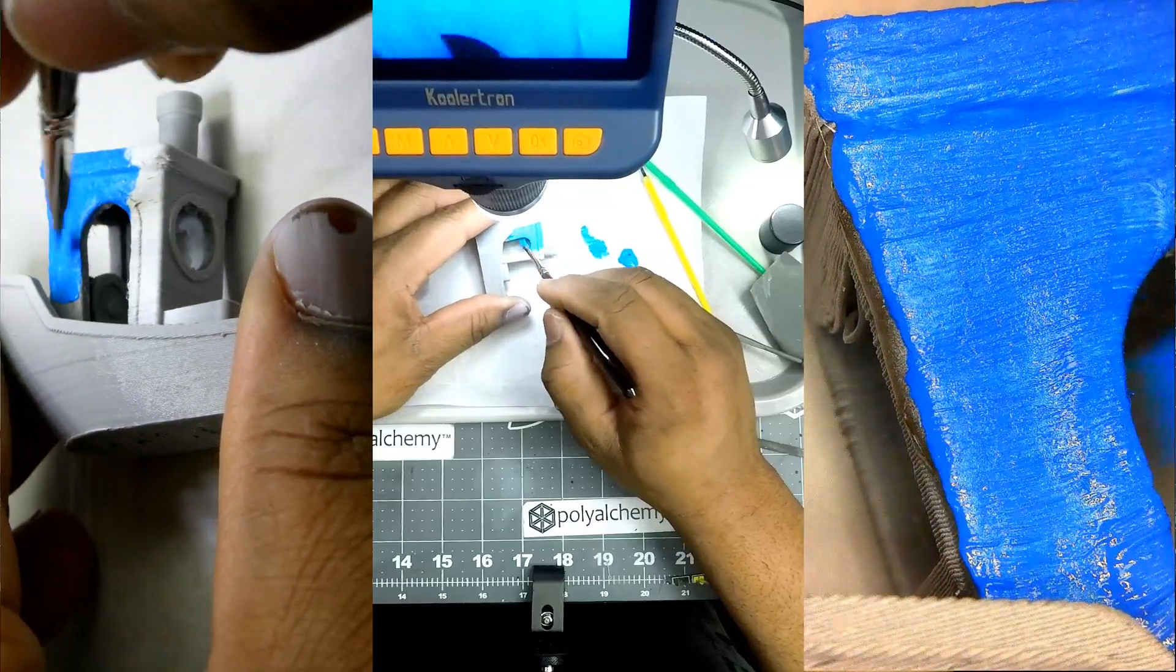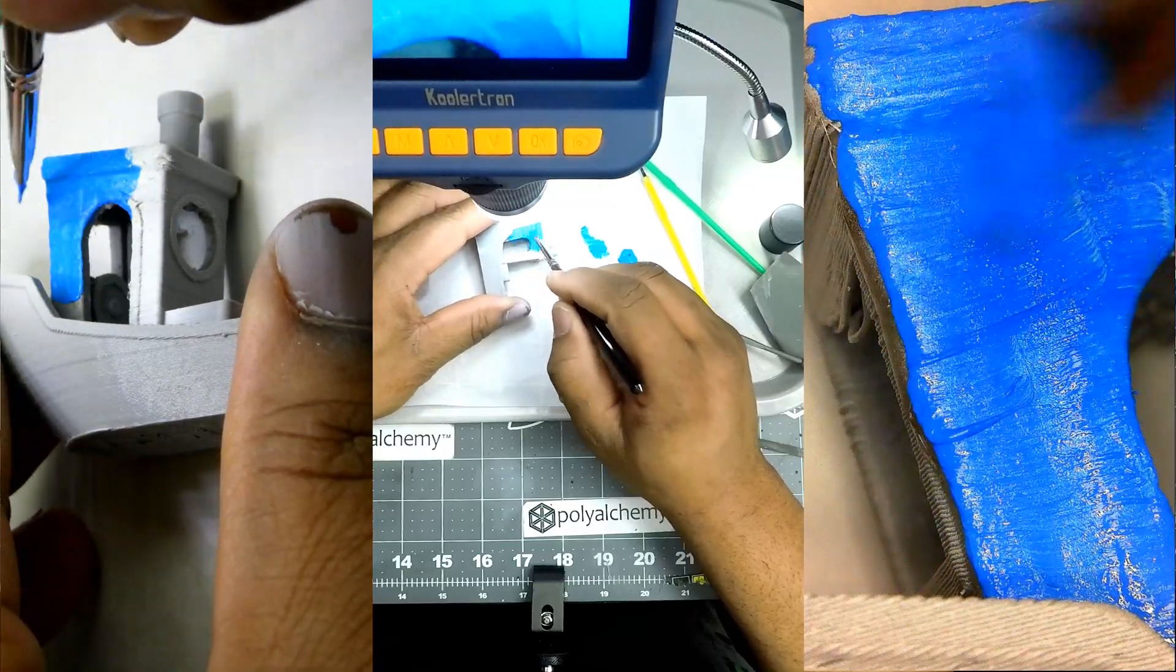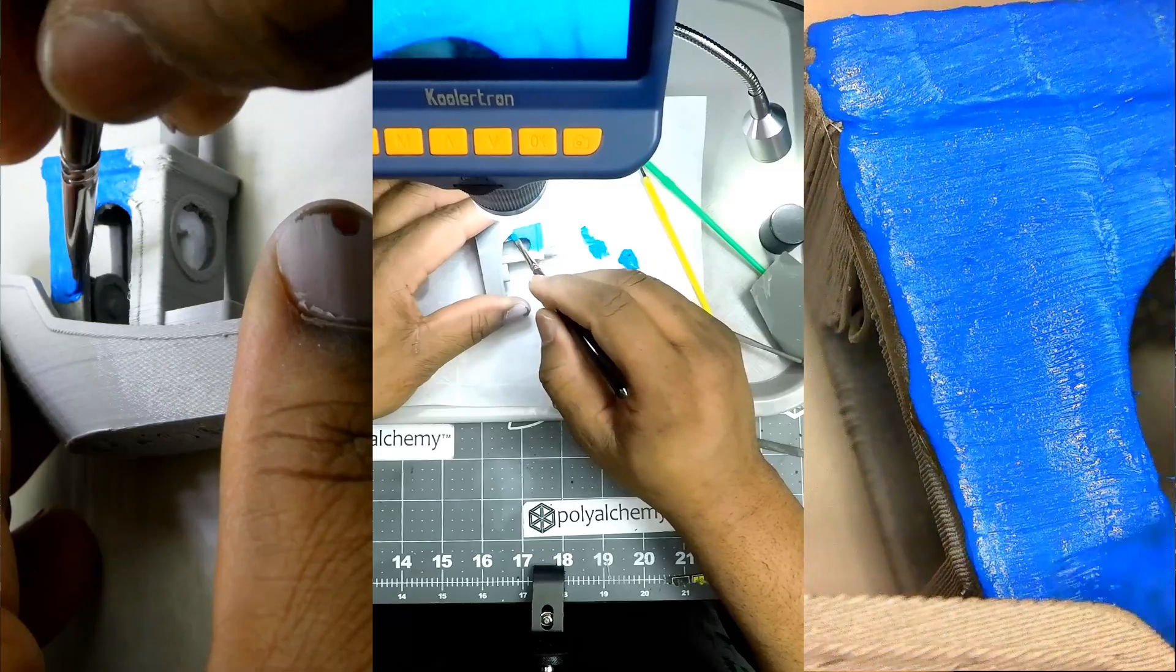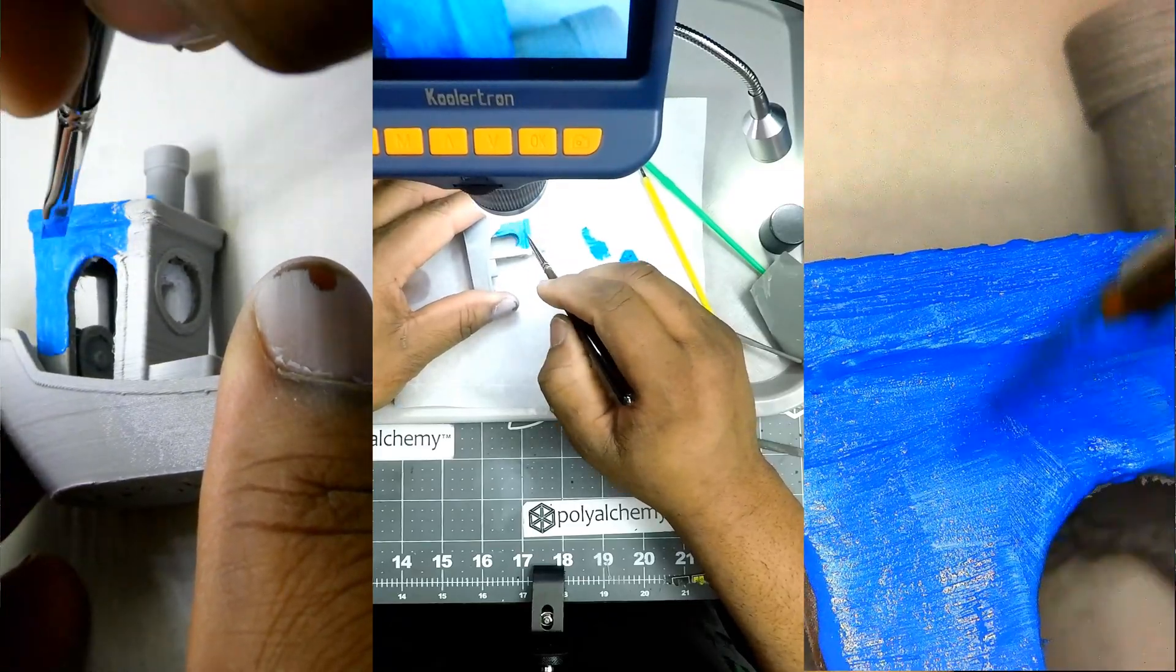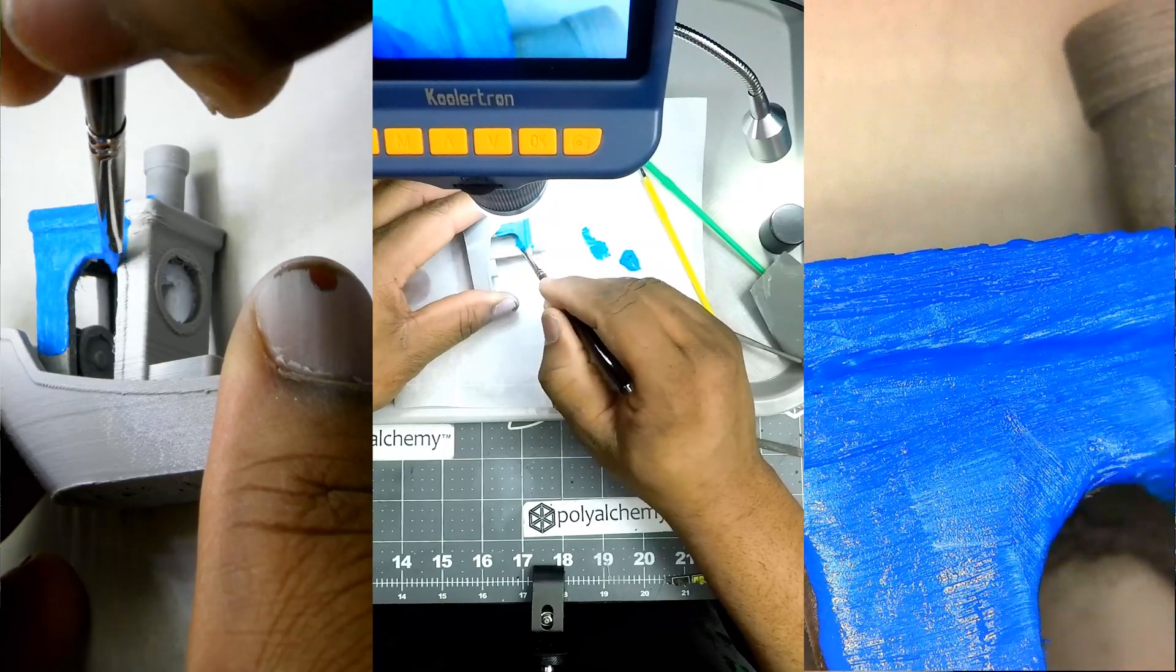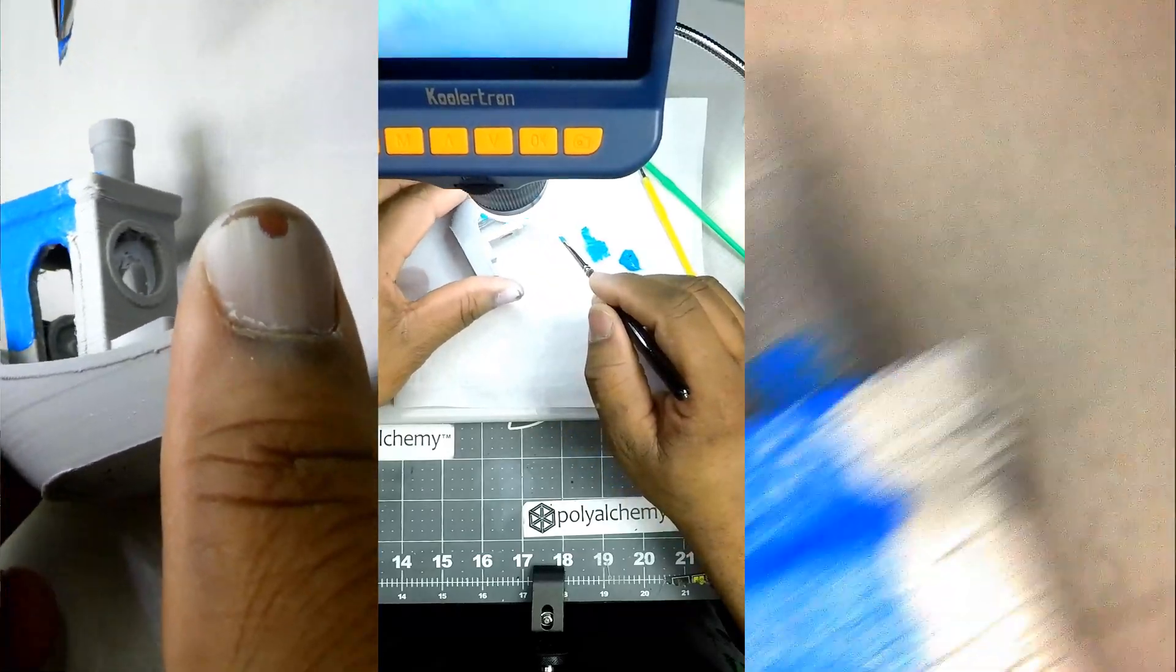And a lot of methods are just, the fumes are just too intense. I've used Bondo and Tamiya's plastic filler. Now Tamiya is way less intense than Bondo. Bondo, you definitely have to do it outside. You have to work with it outside with a mask.